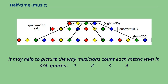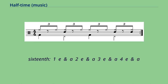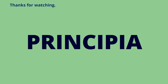It may help to picture the way musicians count each metric level in four fourths. Quarter note: 1-2-3-4. Eighth note: 1-2-3-4-and. Sixteenth note: 1-E-and-a, 2-E-and-a, 3-E-and-a, 4-E-and-a. Thanks for watching.